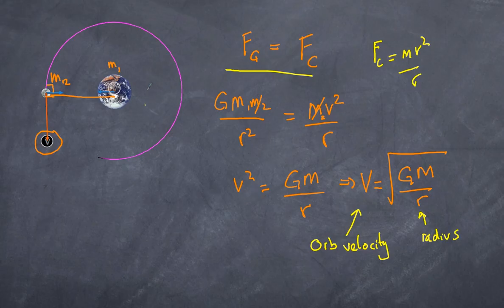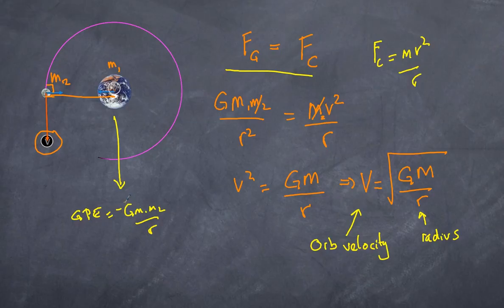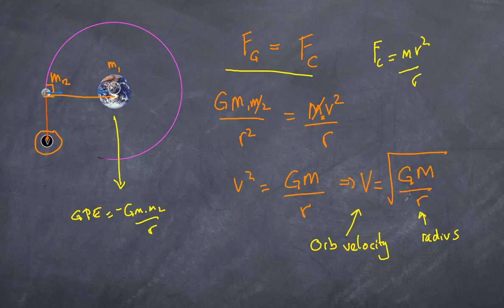One addition: if you move a satellite further from a central body, gravitational potential energy — equal to −G·M₁·M₂ / r — increases. By the law of conservation of energy, if gravitational potential energy increases, kinetic energy must decrease. Since kinetic energy depends on velocity, this is consistent with our orbital velocity equation: moving further out decreases velocity, decreases kinetic energy, and increases gravitational potential energy.